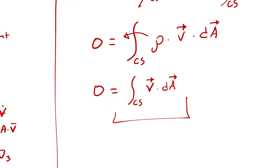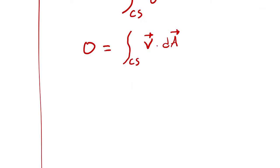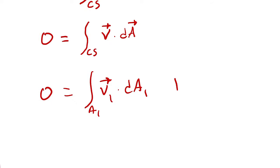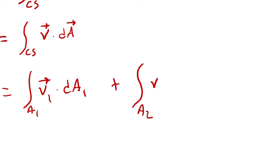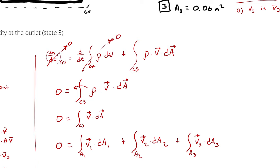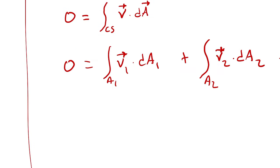This control surface encompasses the entire device, so I split it across all three orifices: 0 = ∫(A₁) V⃗₁·dA₁ + ∫(A₂) V⃗₂·dA₂ + ∫(A₃) V⃗₃·dA₃. Now I simplify for uniform flow — not because I definitely have uniform flow, but because using average velocity means it is uniform across the entire area. Average velocity is the same everywhere, so it doesn't matter if V₁ is actually higher in the center of A₁ than toward the edges.